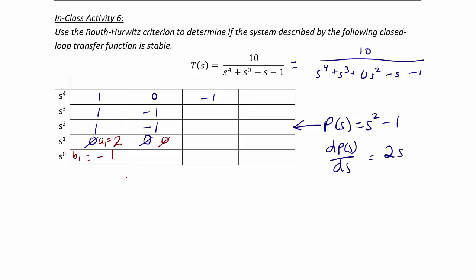So what you see here is that we have one sign change, which means one pole in the right-half plane, so we do have an unstable system. And this means that we have three poles in the left-half plane. And this concludes today's lecture on the stability analysis using Routh-Hurwitz criterion.